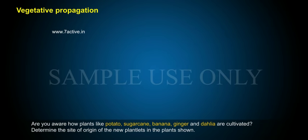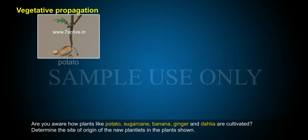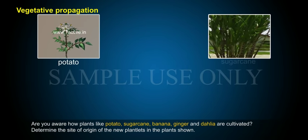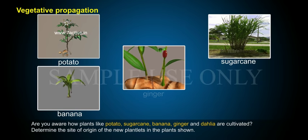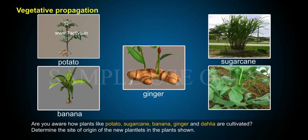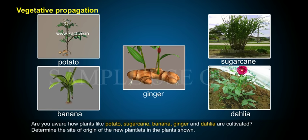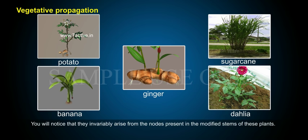Are you aware how plants like potato, sugarcane, banana, ginger, and dahlia are cultivated? Determine the site of origin of the new plantlets in the plants shown. You will notice that they invariably arise from the nodes present in the modified stems of these plants.